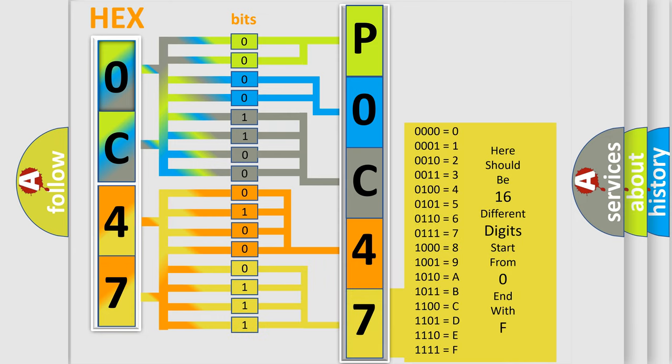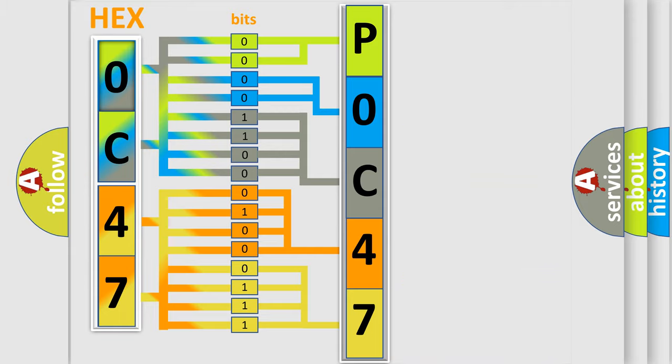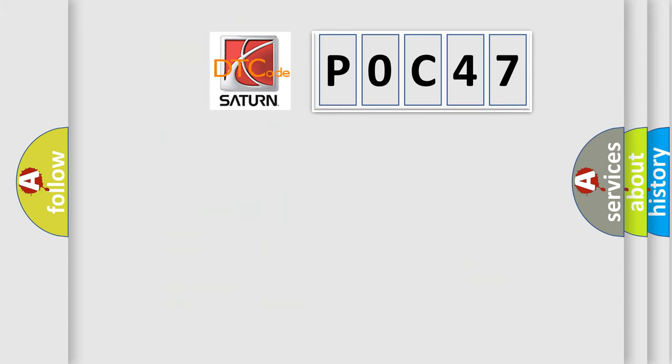We now know in what way the diagnostic tool translates the received information into a more comprehensible format. The number itself does not make sense to us if we cannot assign information about it to what it actually expresses. So, what does the Diagnostic Trouble Code, P0C47, interpret specifically?